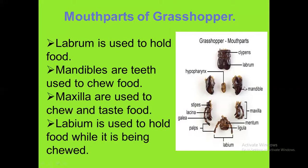Mandibles have two types of muscle: adductor and abductor muscle. Maxilla is used to chew and taste food. It is found just behind the mandible. Each maxilla contains cardo, stipes, galea, and lacinia. There is also a five-segment maxillary palp at their basal region.